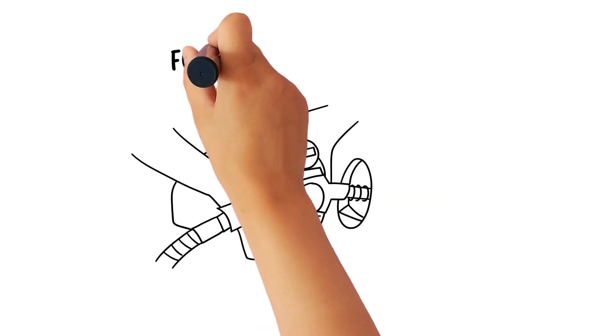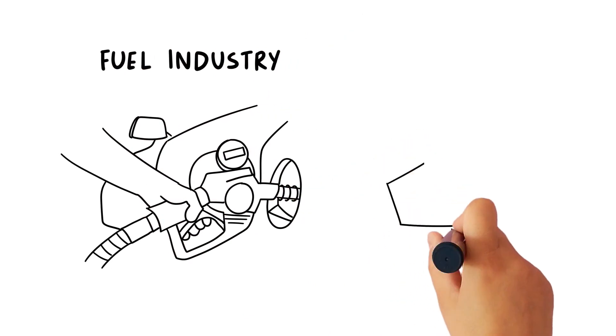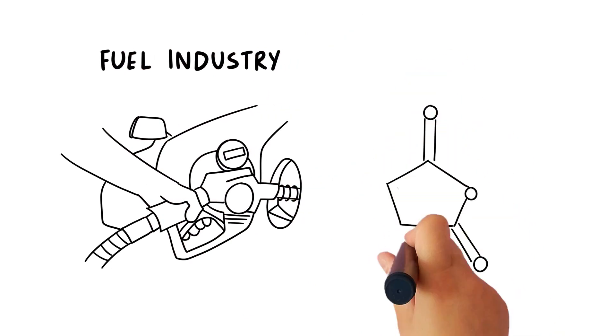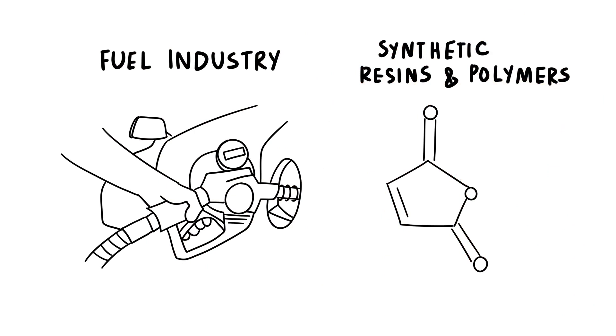Besides the already mentioned usage of isobutane in the fuel industry, n-butane provides an important contribution in the field of synthetic resins and polymers, such as in the maleic acid synthesis by catalytic oxidation processes.